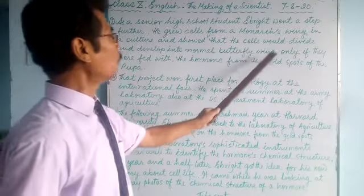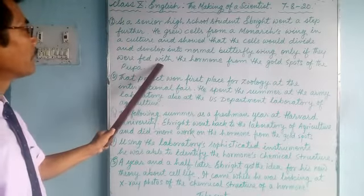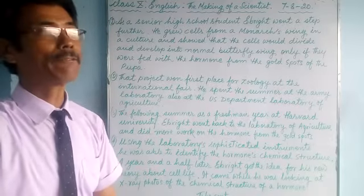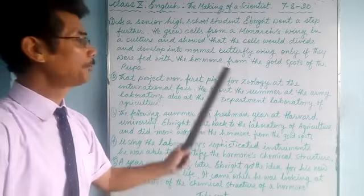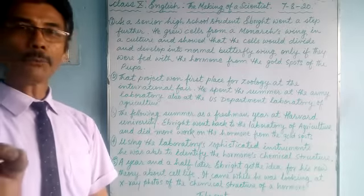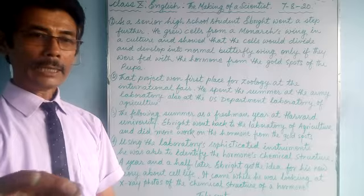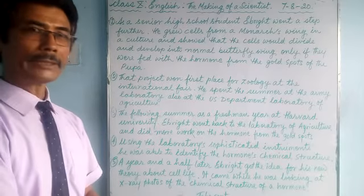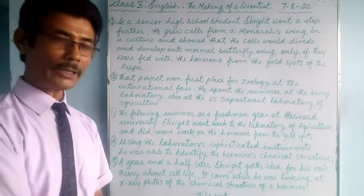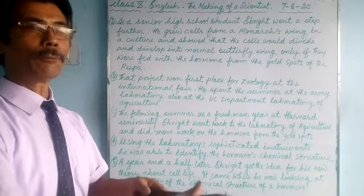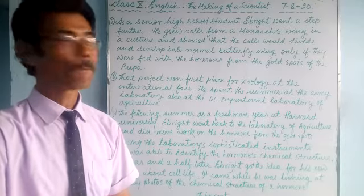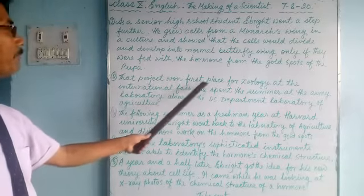The wing cells would develop into a normal butterfly wing only if the hormone from the gold spot was applied. The cells would develop into a normal butterfly wing only if they were fed with the hormone from the gold spot. He took out the cells from the wings of the monarch butterfly, grew them in a culture, added hormone from the gold spot, and the cell divided and formed a full butterfly wing.